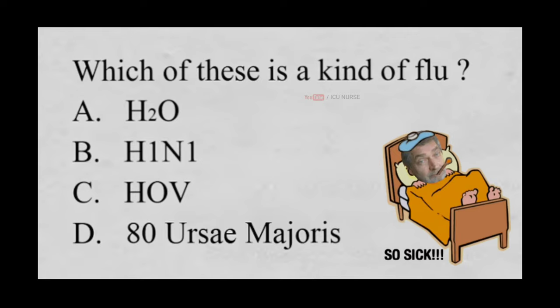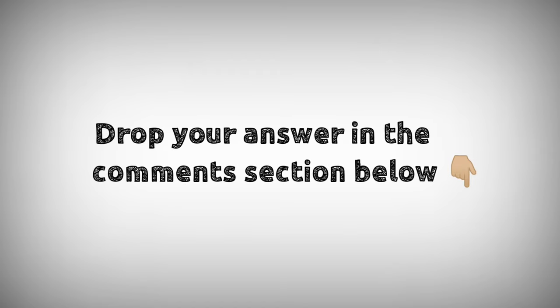Which of these is a kind of flu? A. H2O, B. H1N1, C. HoV, D. Aturace majoris. And the correct answer is B, H1N1.